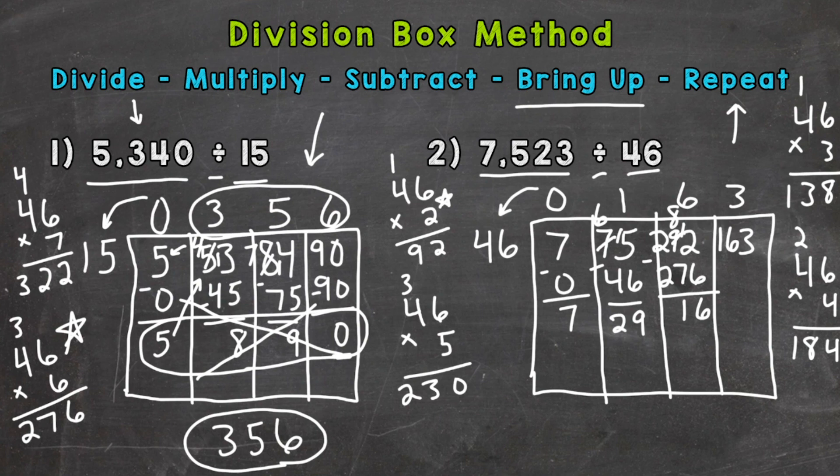Then we do 3 times 46, which we did right here, is 138. And we need to subtract. So borrow, this is going to be a 5. Then we have 13 minus 8, which is 5. 5 minus 3 is 2. And 1 minus 1 is 0. So this last number here, this is our remainder. So 163 remainder, 25 is our answer there. I will rewrite below.